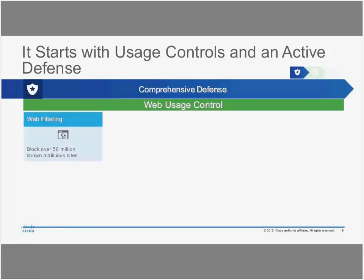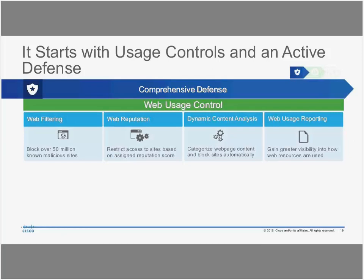Beginning with the comprehensive defense pillar: we start with web filtering. We have lists of domains and URLs that we know contain malicious content or are safe, so we can allow access based on those lists. We also allow the user to customize the kinds of content they want their users to be able to access. An administrator would customize the categories and content users in the organization can access — for example, inappropriate content such as gambling or adult content might be blocked on work computers.